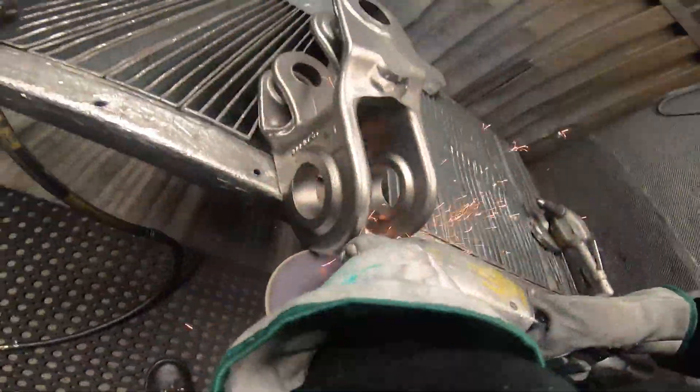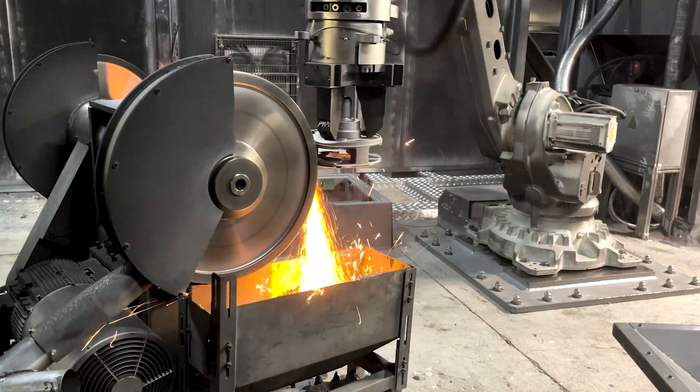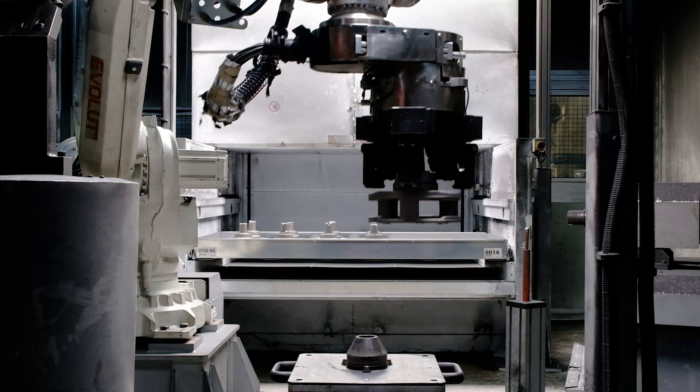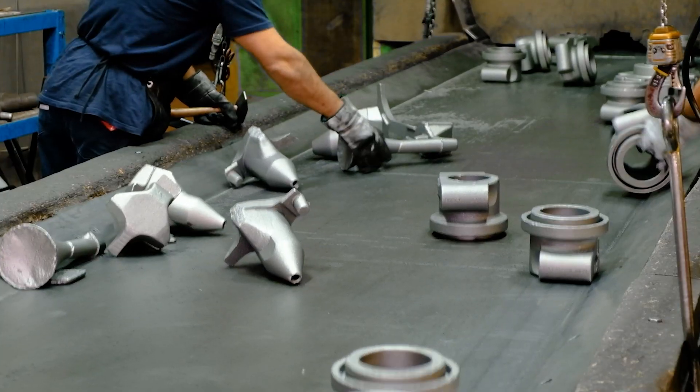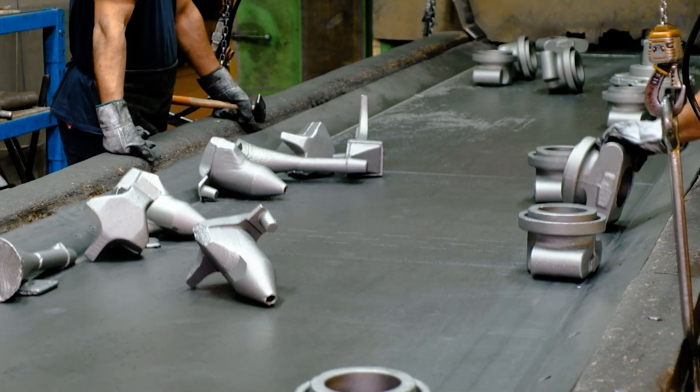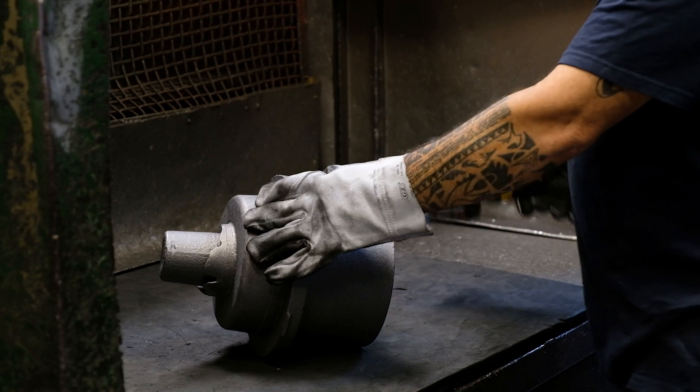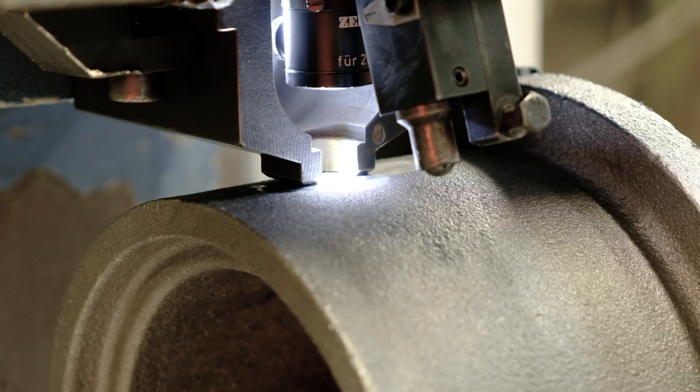Deburring is a mechanical operation, which can be carried out both manually and mechanically, through which the burrs present on the workpiece are removed. Before carrying out the deburring operations, all the cast iron castings exiting the foundry undergo an initial quality check, which includes a visual inspection and a hardness check.